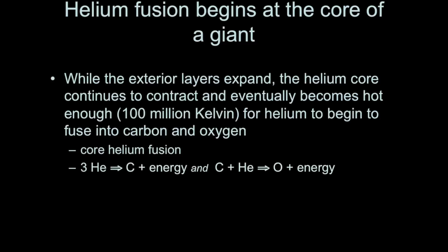Eventually the helium core collapses to the point where its temperature exceeds 100 million Kelvin. At that point, helium atoms can fuse into carbon and oxygen. The reactions are: three helium nuclei fuse into carbon, and carbon plus helium can build oxygen — both releasing energy. These helium fusion reactions occur at a much faster pace than the hydrogen-to-helium reactions during the main sequence.